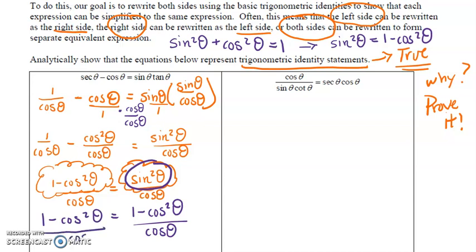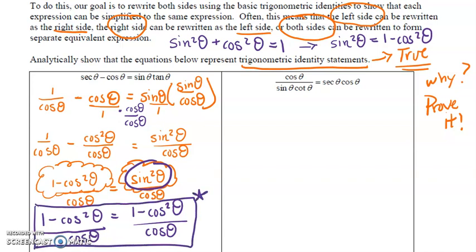With that substitution using the identity, we've proven the left and right-hand sides are exactly the same for any radian value. It's going to be trial and error — if you hit a roadblock, abandon that approach and try something else. The more you practice, the more you'll recognize strategies that work most often. Let's move on to the next example.